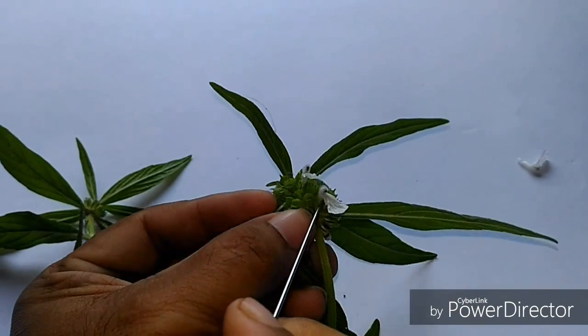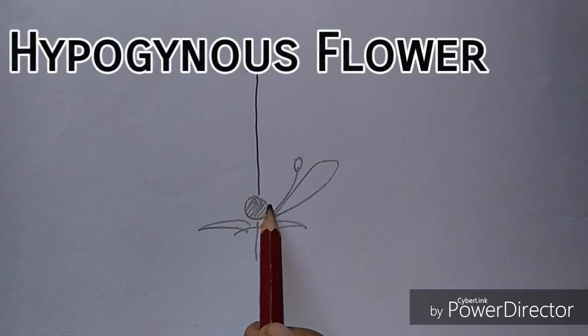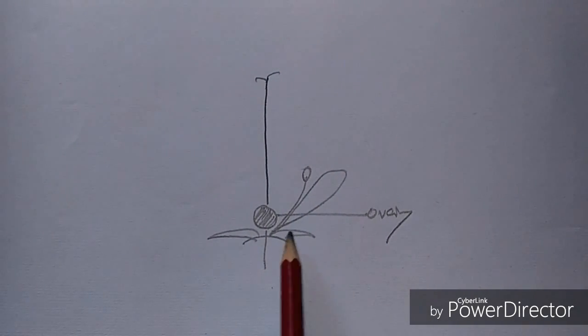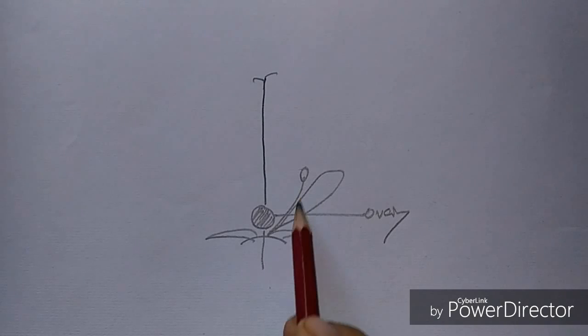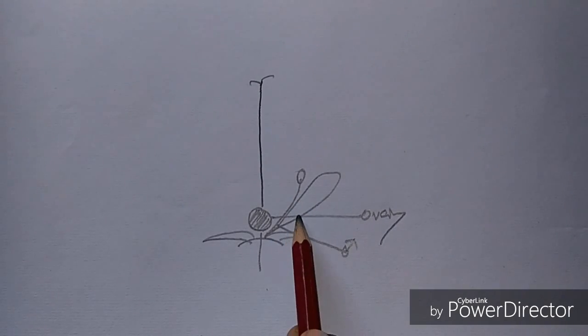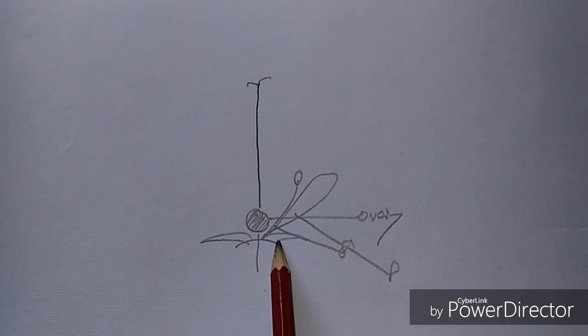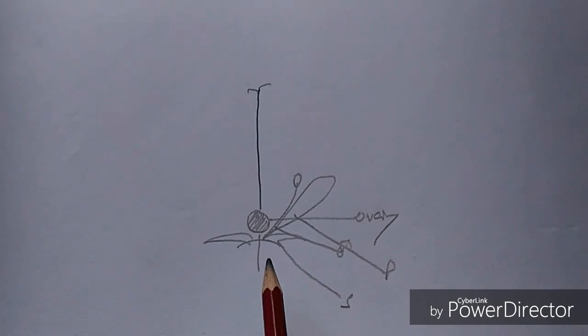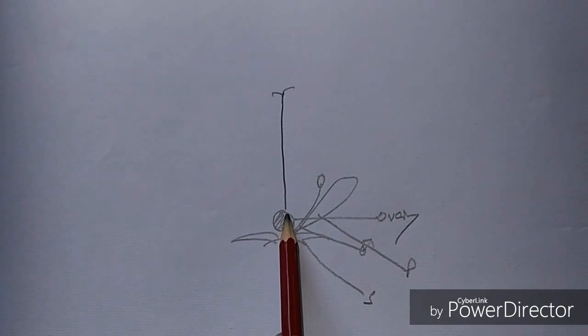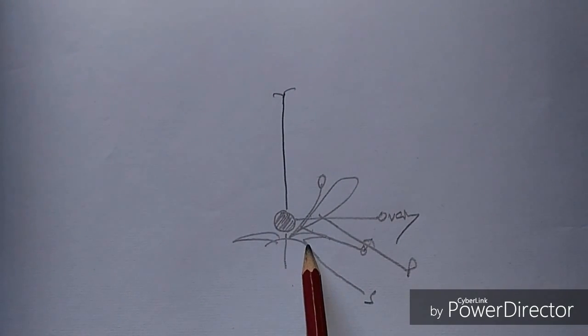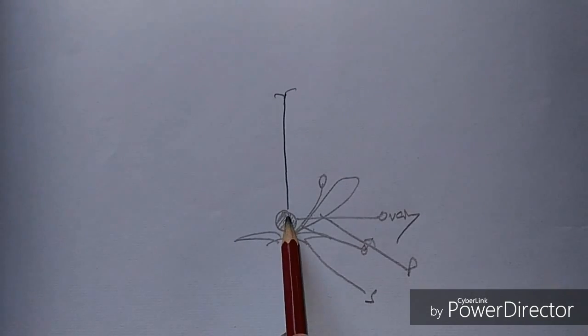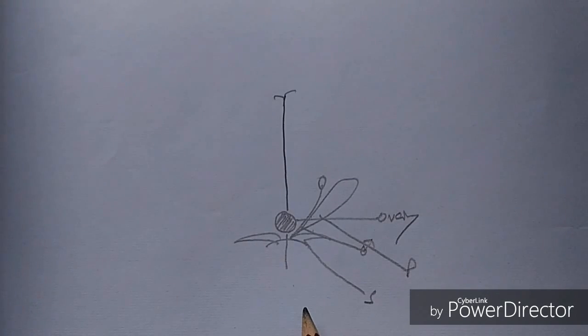And the flower is hypogynous. When all the appendages of the flowers are below the ovary, then such a flower is called hypogynous flower.